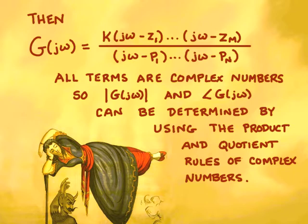Those product and quotient rules were studied in a previous lecture. Recall that to find the magnitude of a product of complex numbers, we simply need to find the magnitude of each complex number. And to find the magnitude of a ratio of complex numbers, we just need to find the magnitude of the numerator and the magnitude of the denominator, and then carry out the division. Products and division, when we do a log-log plot, will appear as the addition of the logs, making determination of the magnitude of g of j omega even easier. For the phase of the product of complex numbers, we simply need to add the phases of each of the complex numbers together.